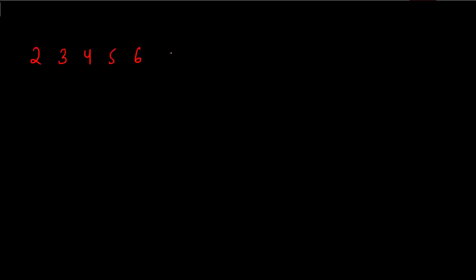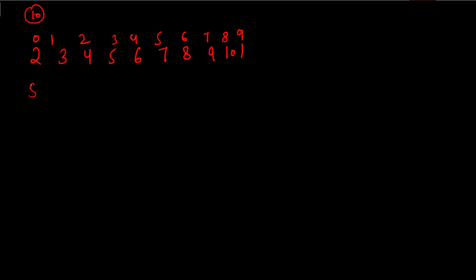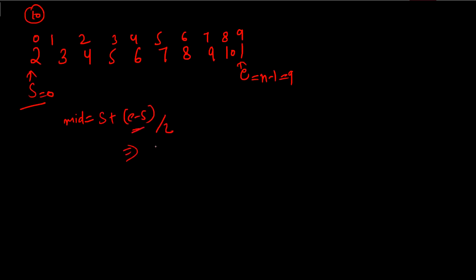Let's walk through the binary search logic with the array: 2, 3, 4, 5, 6, 7, 8, 9, 10, 1 (indices 0 to 9). We initialize start = 0 and end = 9. We calculate mid as: low + (high - low) / 2, giving us index 4 (value 6), to avoid integer overflow.